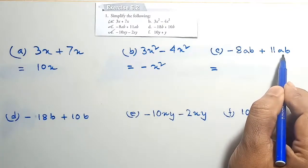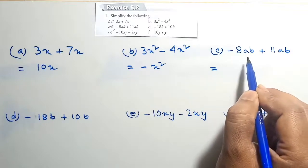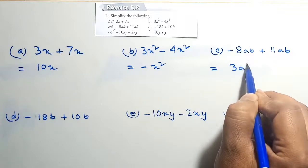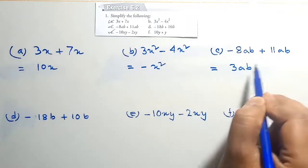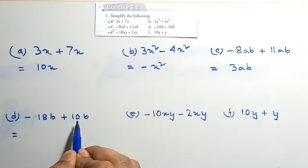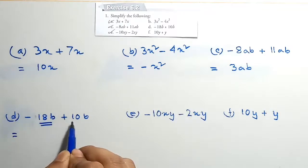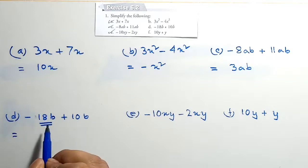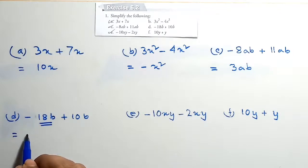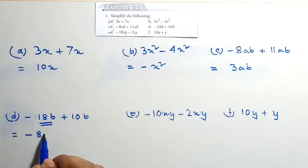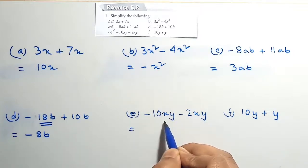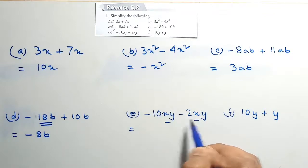Next, 8ab plus 11ab — 11ab is a greater term, and since the greater term is positive, the answer is 3ab. For minus 18b plus 10b: 18b is the greater term and 10b is the smaller term; these are like terms, so the answer is minus 8b.